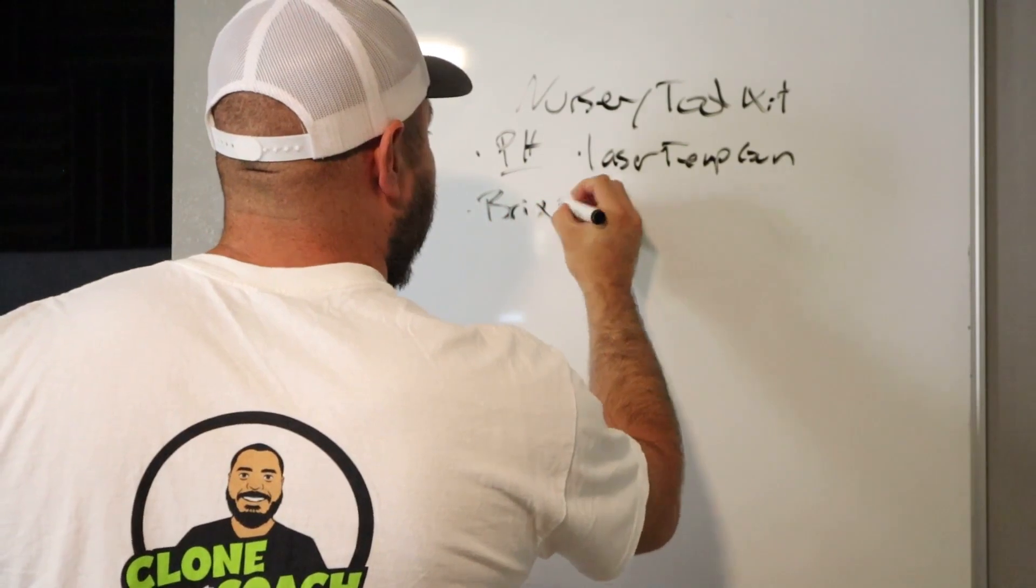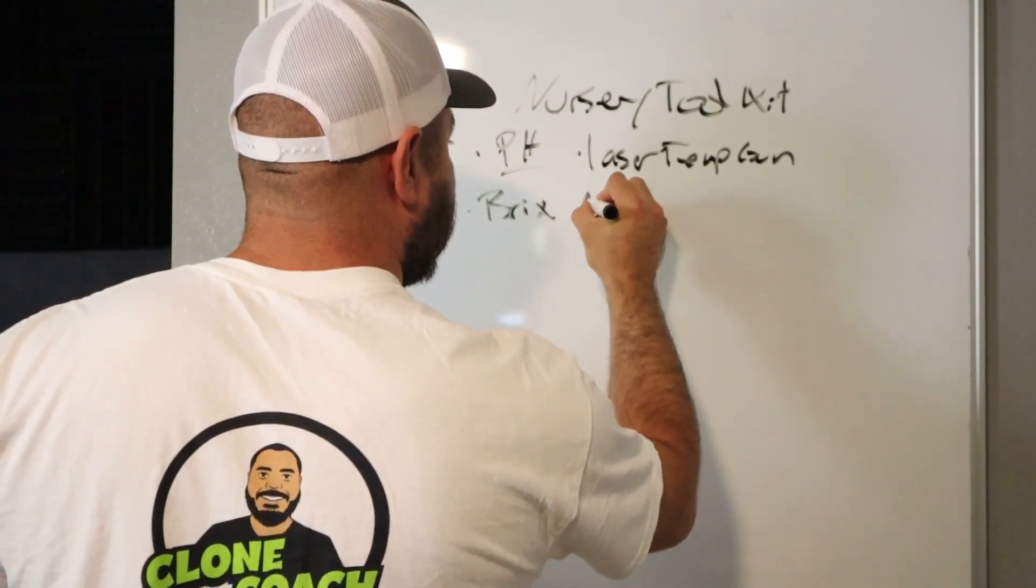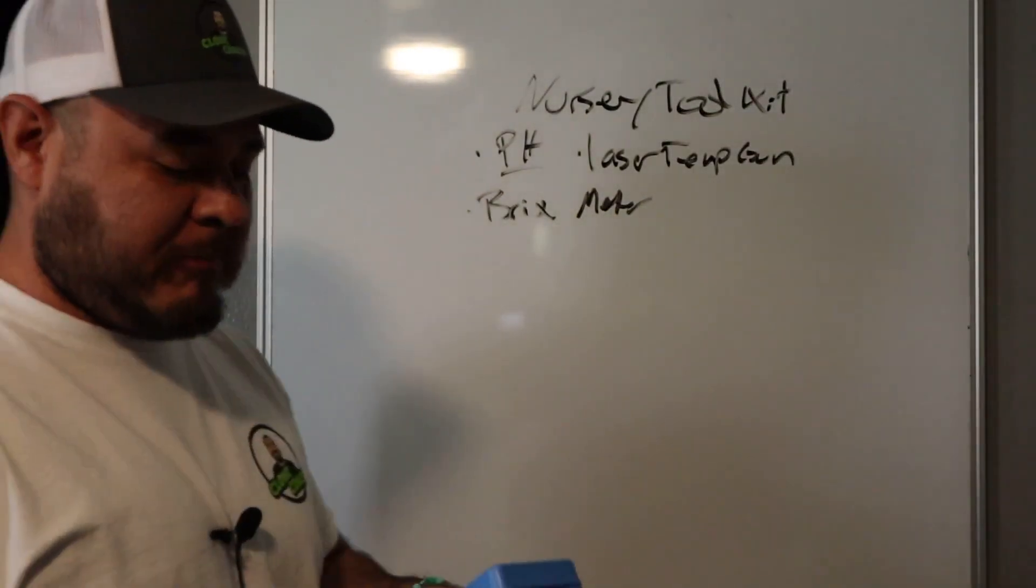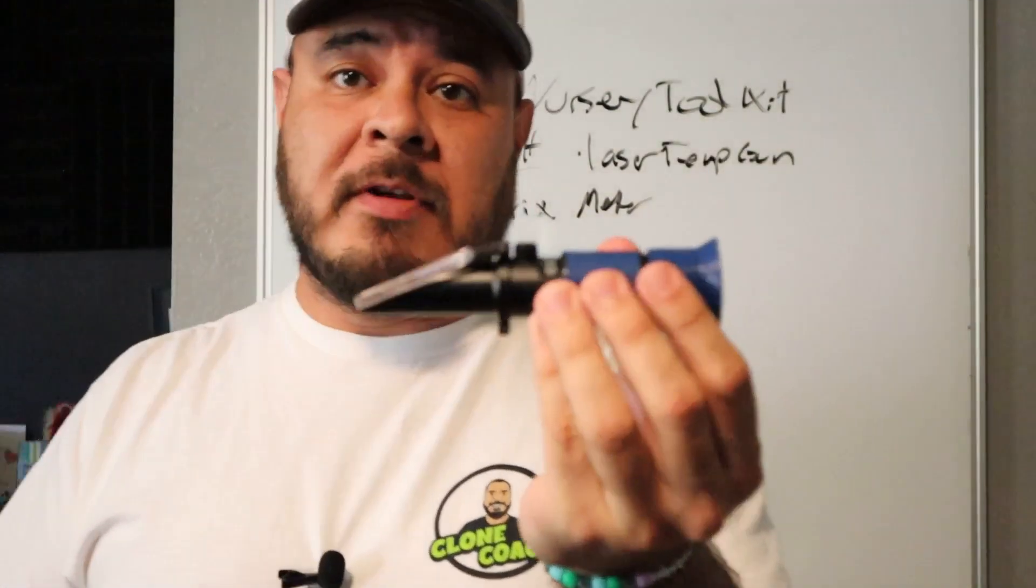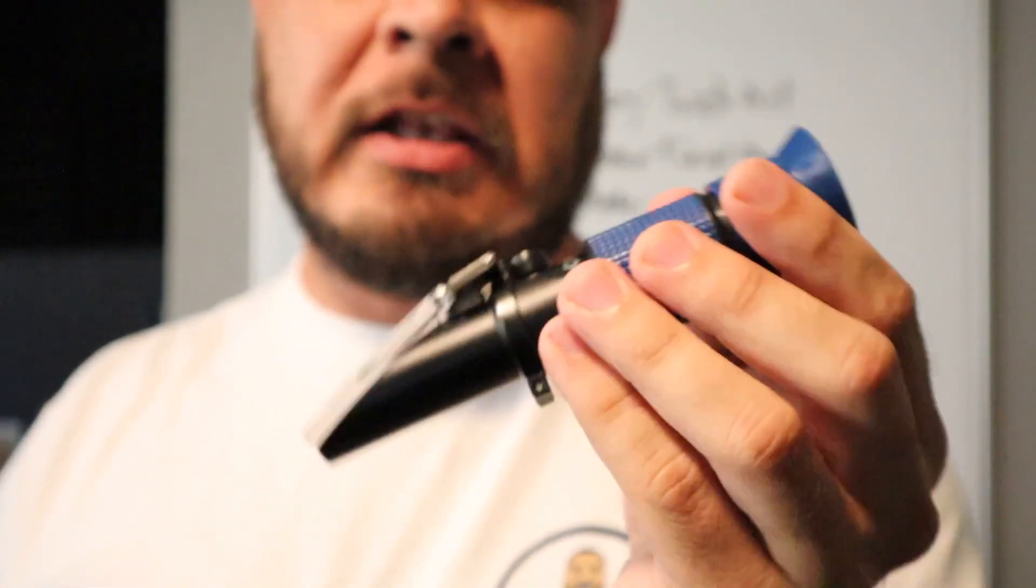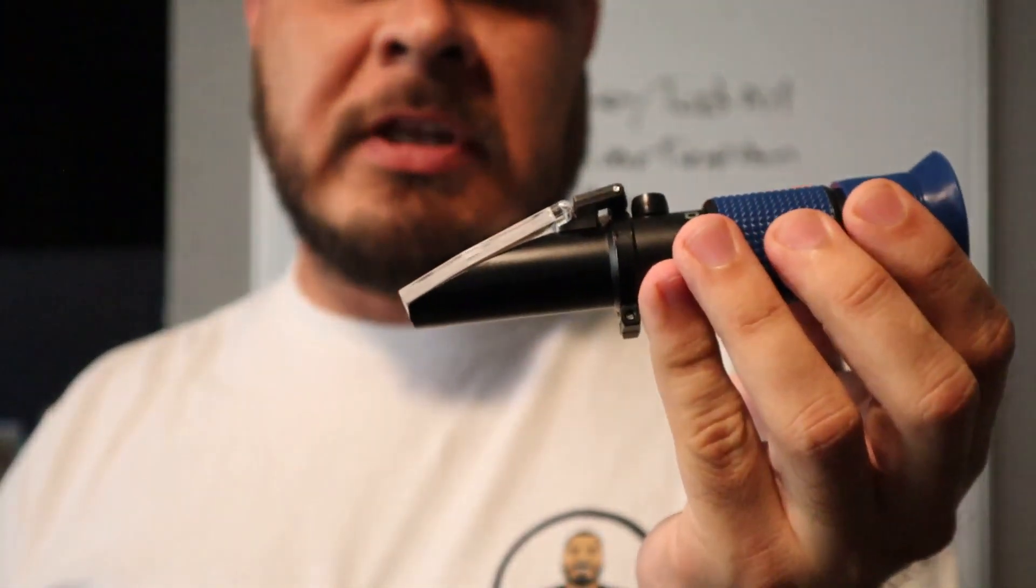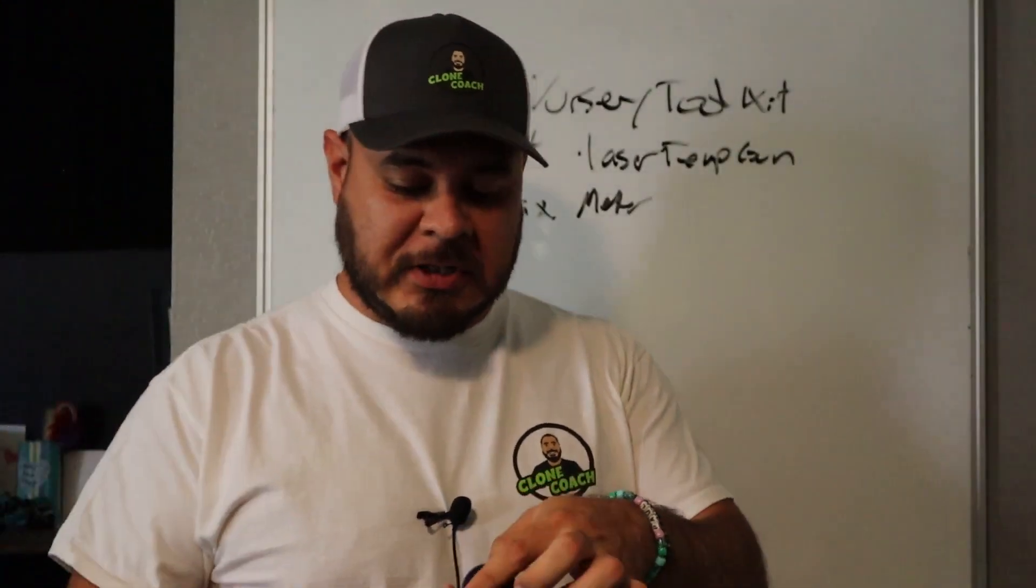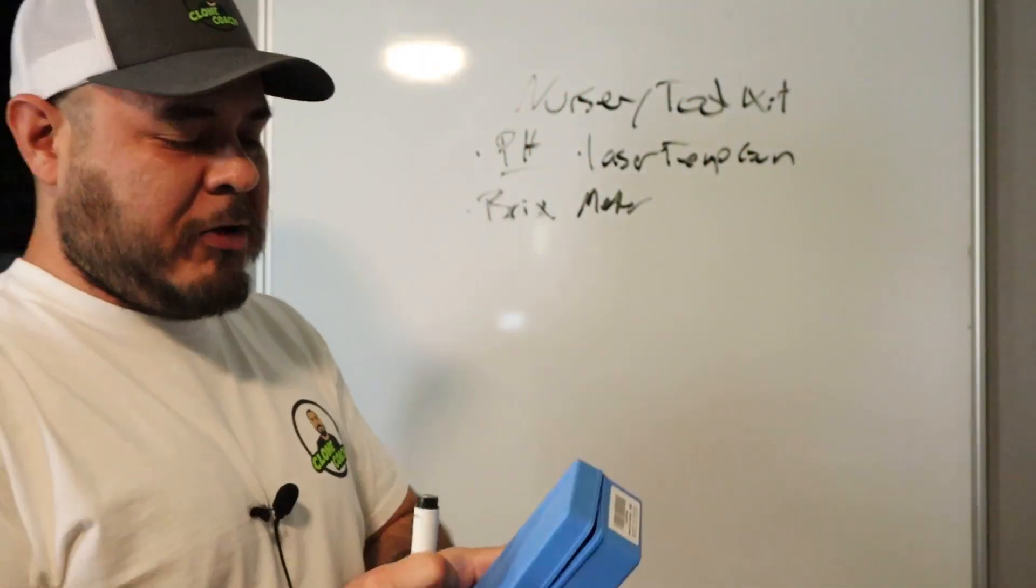This is one I don't think gets used enough. This is a BRIX meter. This BRIX meter is used to measure the sugar content in liquids. What you want to do is get some leaf materials, squeeze out some of the juices there, put a couple of drops on that little flap there, close it up, look through it with some light coming through, and you'll see the levels of sugars on there. Get a BRIX meter.